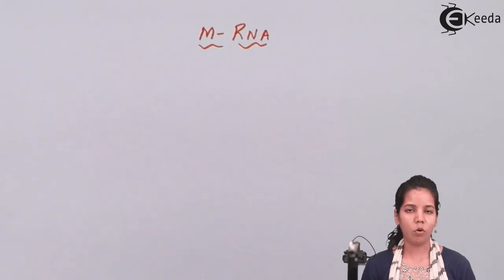If mRNA has codons, tRNA has anticodons. When they come together, the synthesis of protein takes place. mRNA, tRNA, and ribosomal RNA together help in protein synthesis.